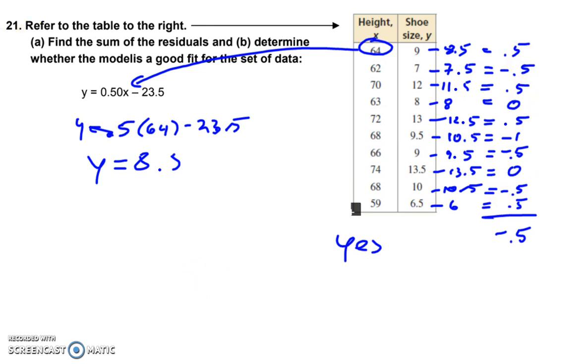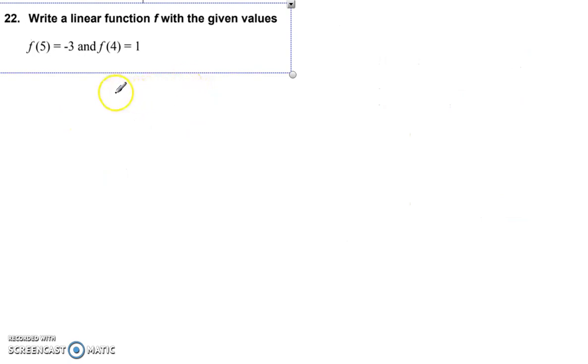And write a linear function. This is the same as if you had coordinates 5 and negative 3, right? Because this is the x inside here and this is y and 4 and 1. So same procedure. Find the slope and plug in a point. Alright.